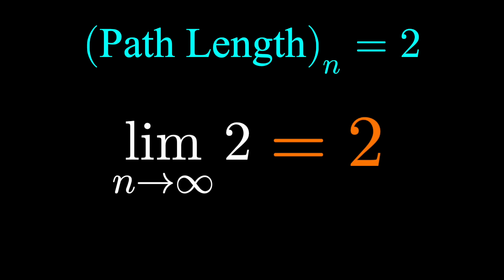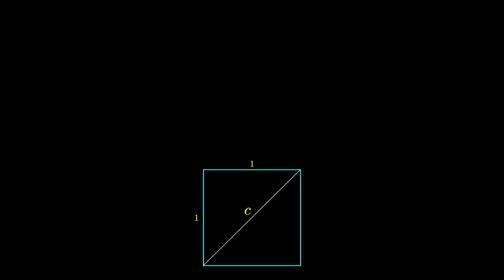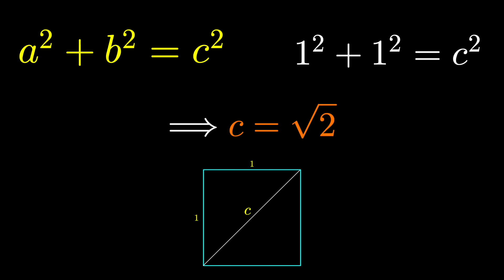But we know the true length of this diagonal by the Pythagorean theorem. 1 squared plus 1 squared equals the diagonal's length squared. The diagonal's length is square root of 2, which is different from the path length of our staircase.